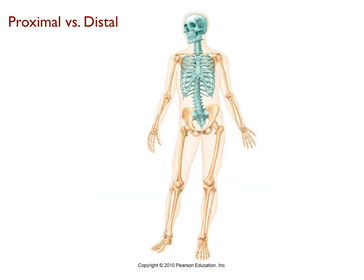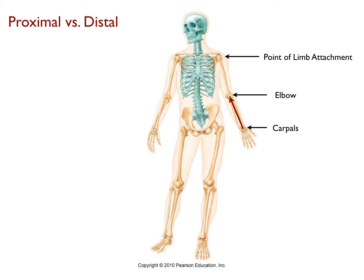The next two terms on your list, proximal and distal, are the two terms students generally find the most confusing. One of the keys to understanding and using these terms correctly is to remember that they are only used to describe structures in the appendages — that is, in the arm and leg. The term proximal refers to structures that lie toward the point of attachment of a limb to the main trunk of the body. In contrast, the term distal refers to structures that lie away from the point of attachment. For example, we want to know where the elbow is in relation to the wrist bones or carpals. Picture an arrow between the elbow and the carpals, pointing toward the elbow. Notice that in this example the arrow points toward the point of limb attachment, and consequently we say that the elbow is proximal to the wrist or carpals.